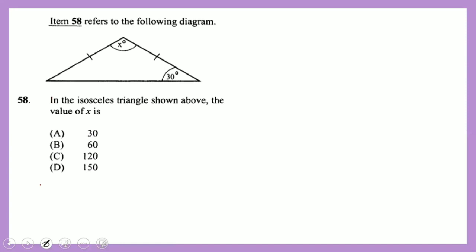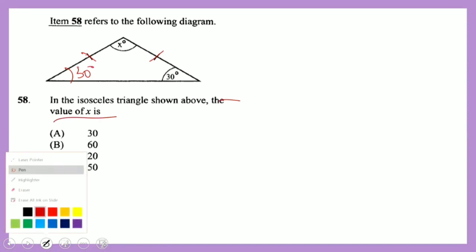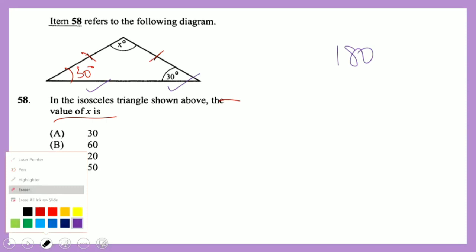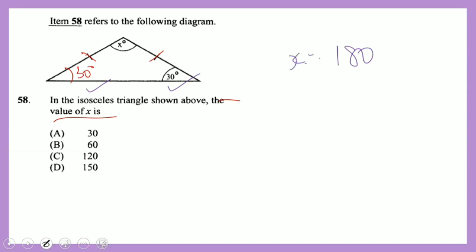Question 58: an isosceles triangle. Since two sides are equal, the two base angles are also equal. The three angles sum to 180°. The two equal angles add up to 60°, so x = 180° − 60° = 120°.